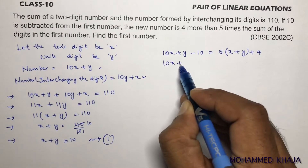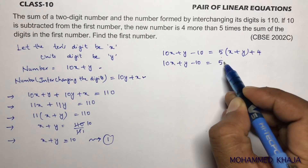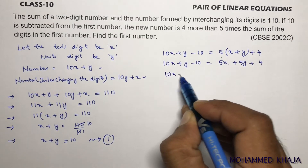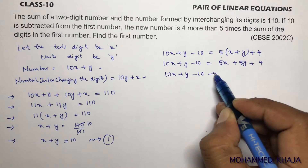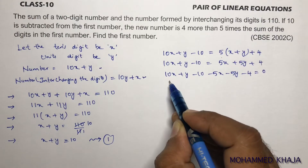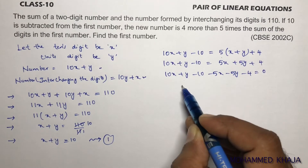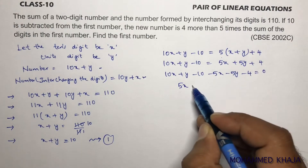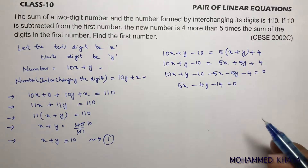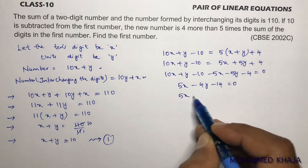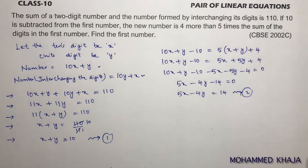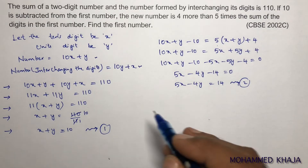Simplifying: 10x + y − 10 = 5x + 5y + 4, which gives 10x − 5x + y − 5y − 10 − 4 = 0, so 5x − 4y = 14. This is equation 2.